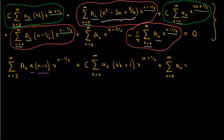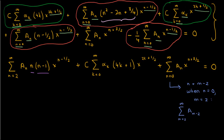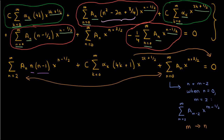Adding the remaining term and equating to 0, we change the index from n to m minus 2, so the sum becomes the sum from m equals 2 to infinity of A sub m minus 2 times x to the power m minus 1/2. Changing m back to n, shifting the summation involving c to the right-hand side, and combining summations on the left, our equation takes its final form ready for solving.